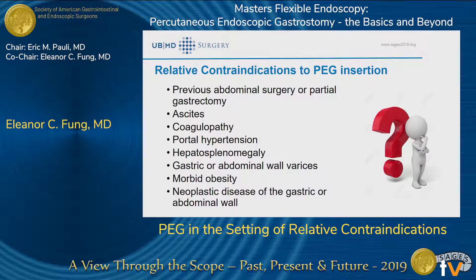In terms of my talk, we're going to go through some of the relative contraindications — or what used to be considered contraindications to PEG tubes — one being previous abdominal surgeries or any previous gastric procedures, either bariatric procedures or gastrectomies. With patients with ascites, the reason is the amount of fluid that can be interposed between the stomach and the anterior abdominal wall, which can cause increased risk of complications such as wound infections, leakage, or dislodgement.